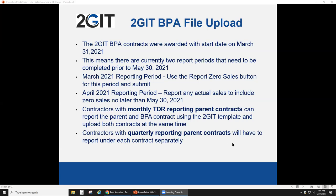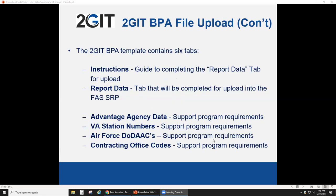Contractors with quarterly reporting parent contracts will have to report under each contract separately. Since the people on this call are quarterly reporters, your sales roll up at the SIN level. You'll report your parent contract at the SIN level on a quarterly basis, and your to-Get BPA contract will be reported in a TDR fashion — monthly — through a file upload.